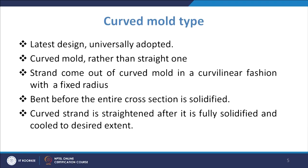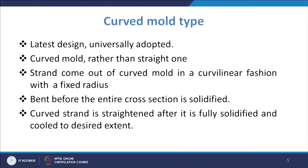Next is the latest trend of mould type used in continuous casting — that is the curved mould type. In this case the mould itself is curved rather than straight. In the previous two cases you have a straight mould and after a certain point you do the bending, but in this curved mould type — which is an advancement in the design of the continuous casting unit — the mould itself is curved.